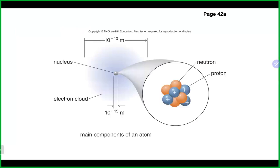The nucleus is very small compared to the overall size of the atom, yet it is the mass center where protons and neutrons reside. An electron density map or probability map shows darker areas as higher probability of finding an electron and lighter areas as lower probability. A lower probability area doesn't mean an electron won't be found there — it just means there is a lower probability.